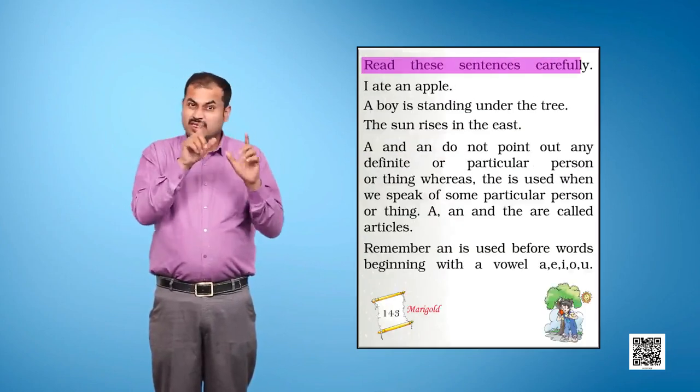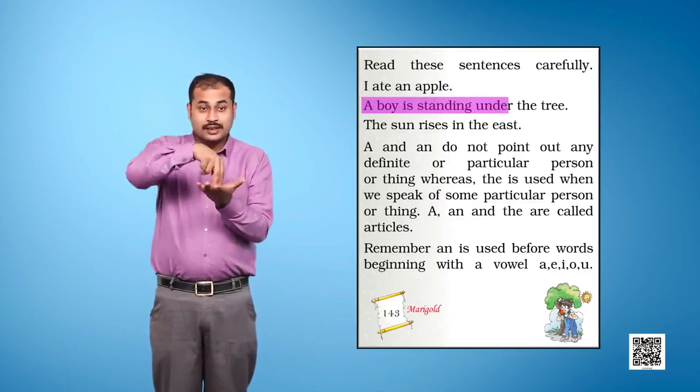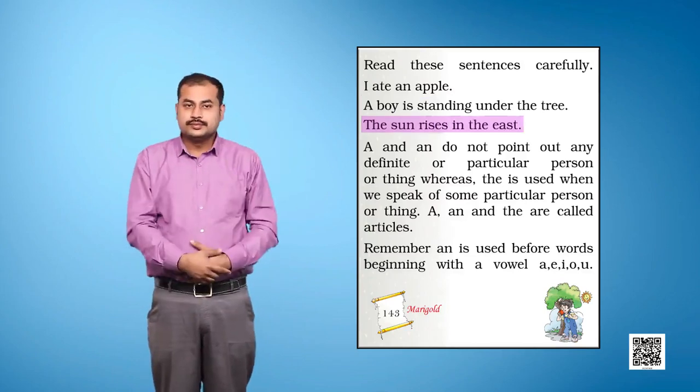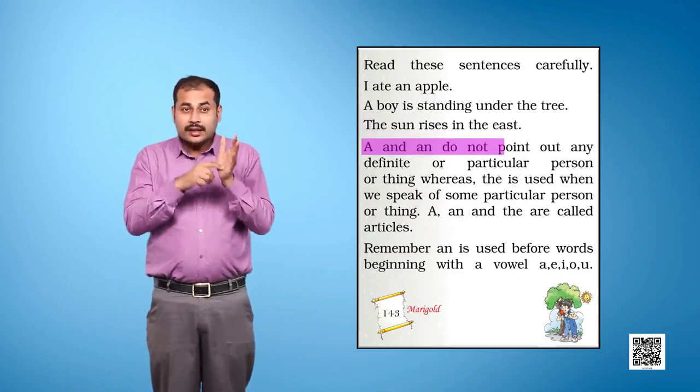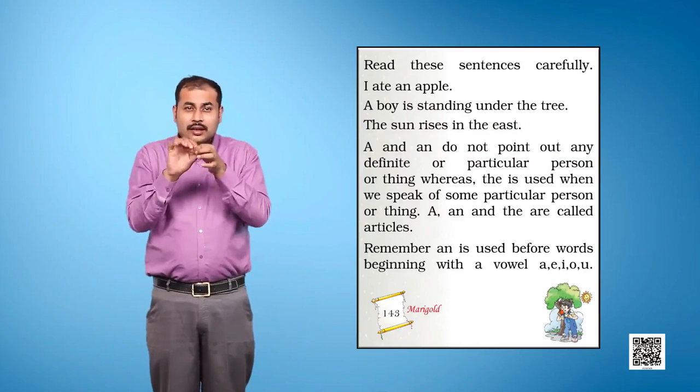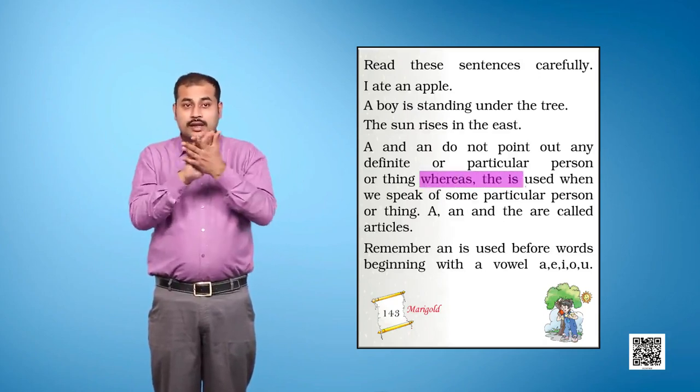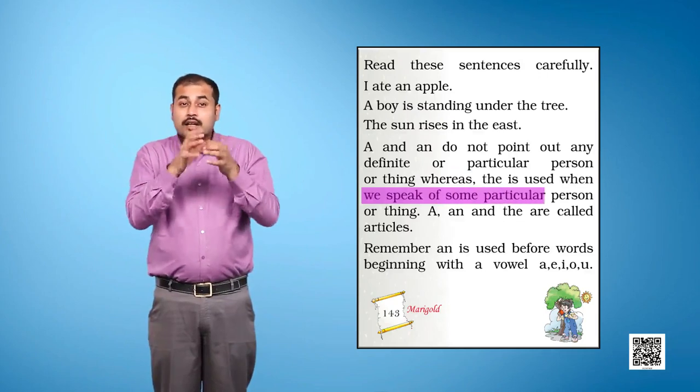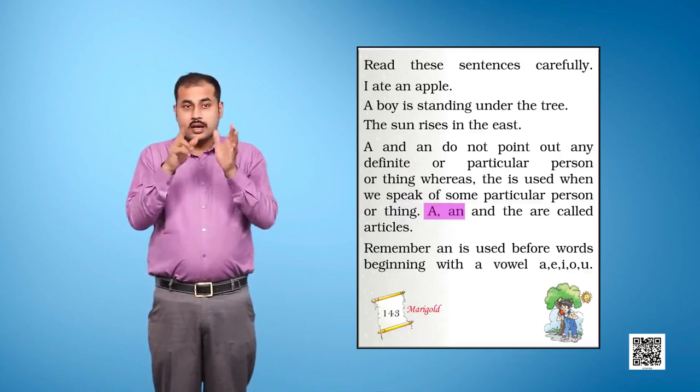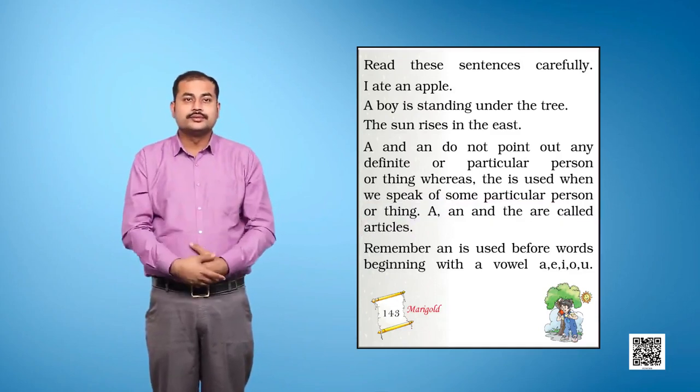Read these sentences carefully. I ate an apple. A boy is standing under the tree. The sun rises in the east. A and An do not point out any definite or particular person or thing. Whereas, the is used when we speak of some particular person or thing. A, An, and the are called articles.